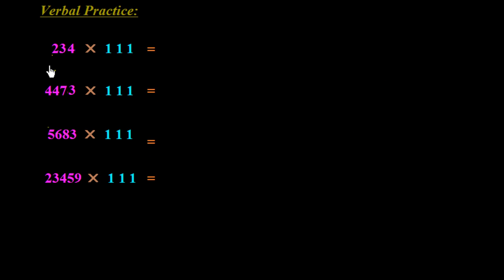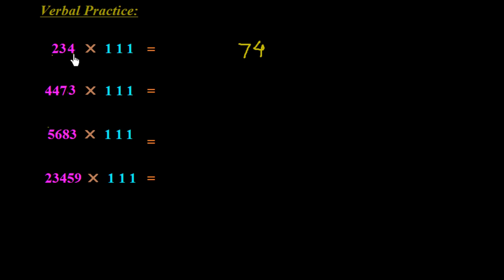Let's practice. We have 234 × 111. First write 4, then 3 plus 4 is 7, then 2 plus 3 plus 4 is 9, then 2 plus 3 is 5, and finally 2. So the answer is 2, 5, 9, 7, 4 — that is 25,974.